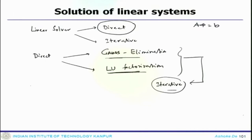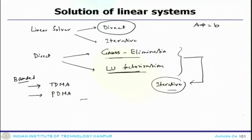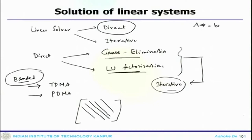We have talked about a couple of special cases — the banded system. Under the banded system, we discussed TDMA, which is called the Thomas algorithm or tri-diagonal matrix algorithm, and PDMA, the pentadiagonal matrix algorithm. These are all applicable for banded systems — one case has 3 elements, the other has 5 elements. These are the banded matrix methods we have discussed.